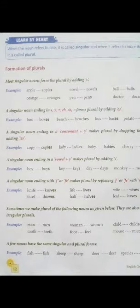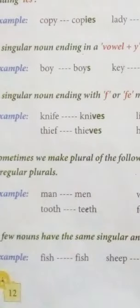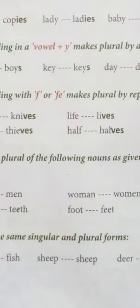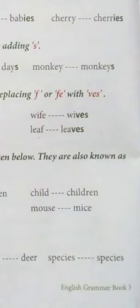Last formation of plurals: A few nouns have the same singular and plural forms. Kuch nouns aise hote hai jinke singular aur plural same hote hai, unmein koi changes nahi hoti. Like fish remains fish — jab singular hoga tab bhi fish padhenge, aur jab plural hoga tab bhi fish hi padha jayega. Sheep will remain sheep — ismein koi changes nahi aenge. Deer will remain deer. Species will remain species — singular ke liye bhi aur plural ke liye bhi.